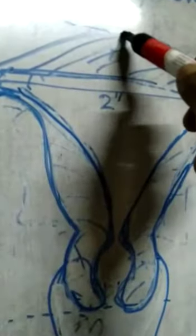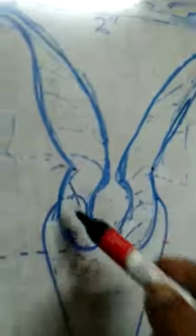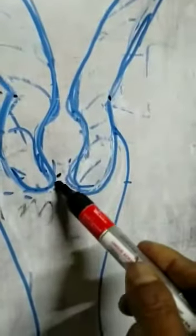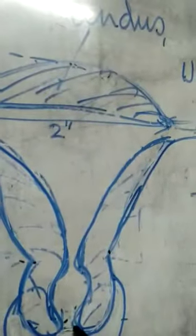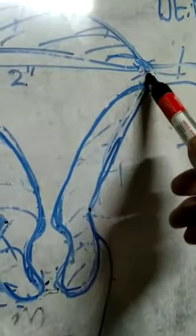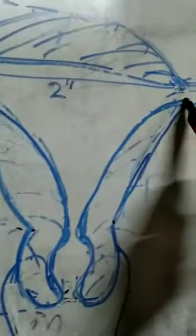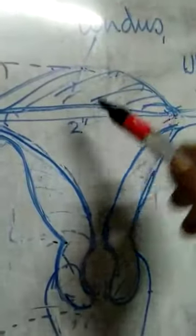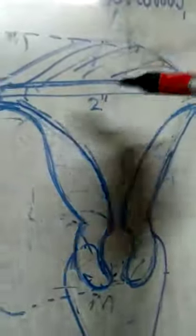Now students, we will discuss about the uterus and fallopian tube. The upper portion of the uterus is the fundus, this constricted portion is known as the isthmus, and this is the external os. The length of the uterus is three inches from fundus up to the external os, and the transverse measurement from the lateral end is two inches.